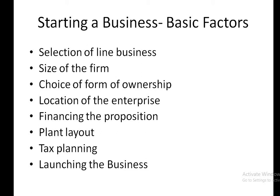Next point: choice of form of ownership. A business organization may take the form of sole proprietorship, partnership, or joint stock company. The choice of a suitable form of ownership will depend on factors like capital requirement, liability of owners, division of profit, continuity of business, etc.